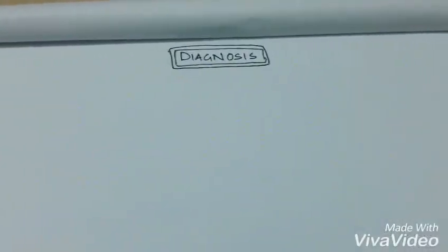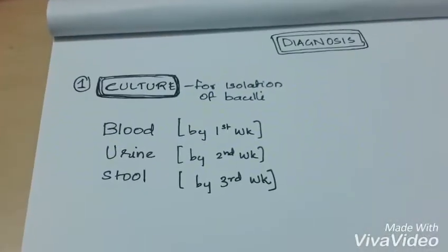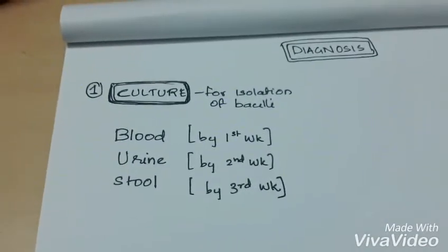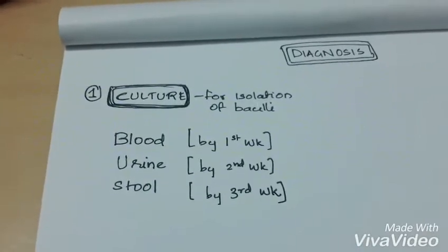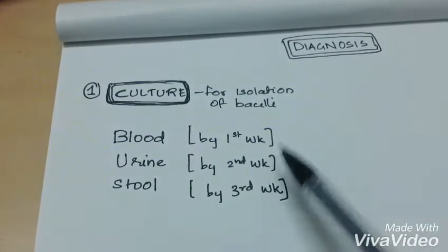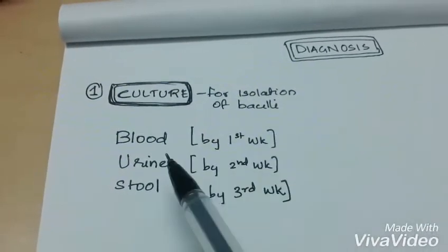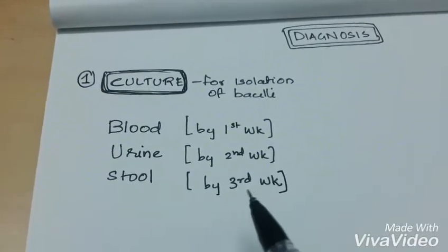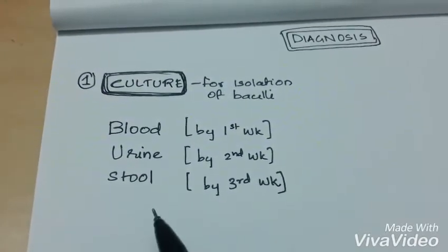Coming to diagnosis, first one is culture. For isolation of the bacillus, we can do blood culture, urine culture, and stool culture. By the first week of fever, we can identify the bacilli from the blood. From the second week, we can see it from the urine, and by third week, we can culture it from the stool.